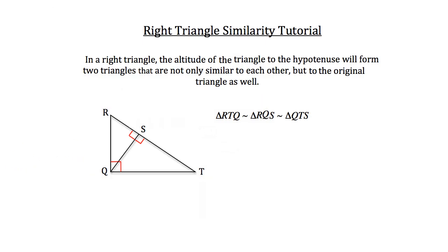Now we can turn this into an actual problem. Given that segment RS has a length of 2, segment ST has a length of 4, segment RQ has a length of B, and segment QT has a length of A, we can use the geometric mean and the similarity between these three right triangles to solve for A and B. We first want to set up proportions comparing two sides of the same two triangles.